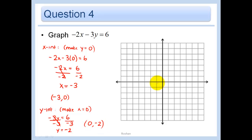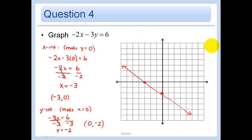Let's plot them: (-3, 0) and (0, -2). We have a line that is falling. If I put this in y = mx + b form, would my slope be positive or negative? Negative. But I don't see my slope explicitly because this is in standard form.